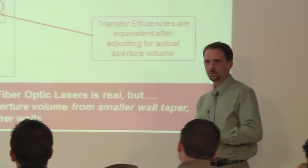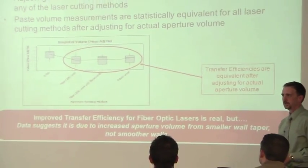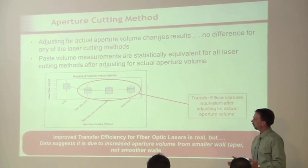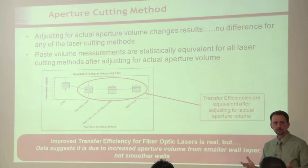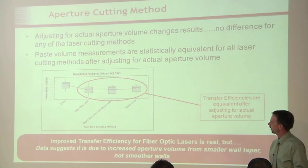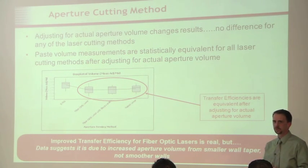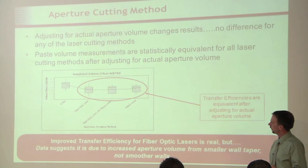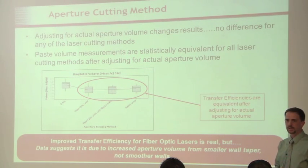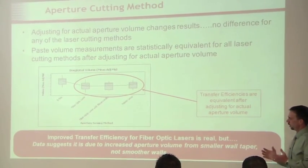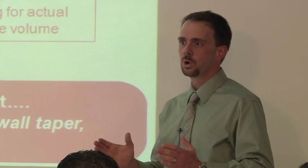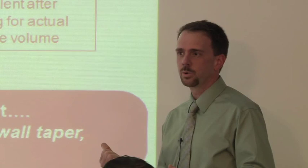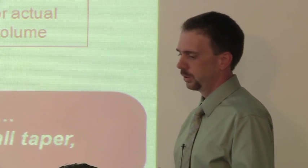You remember that chart from a couple of slides back showing the expected results for the different cutting methods. Well, once we normalize for the actual aperture size, suddenly it looks a little bit different. EFAB looks about the same — our data shows it still releases better. But look at all the different cutting methods — the fiber optic, the fiber optic with electropolish, and the pulsed YAG — they're all the same. Basically, they're all equivalent once you adjust for the actual volume in that aperture. So we believe that the increased transfer efficiency for fiber optic lasers is real, just not so sure it's because of the smoother walls. Our data suggests it has more to do with the actual real volume of that aperture — you're just able to print more.